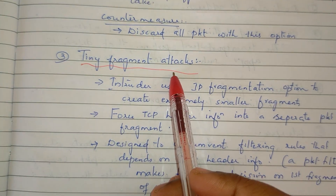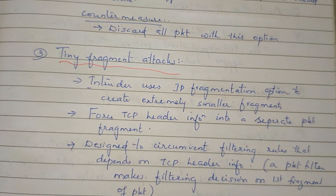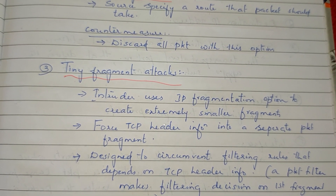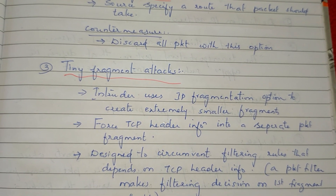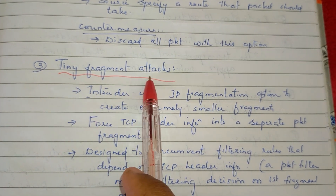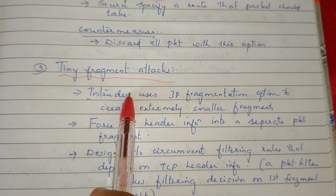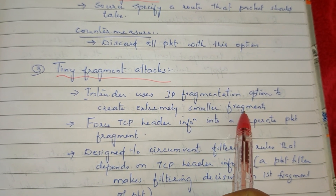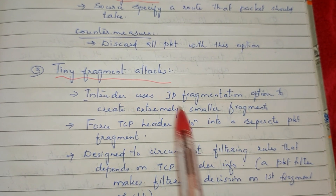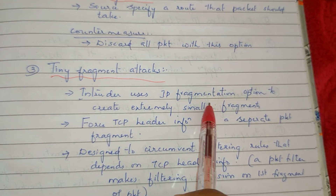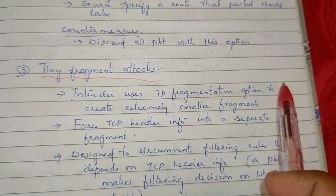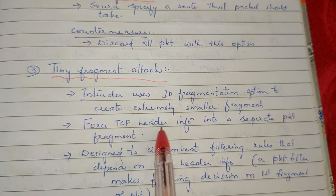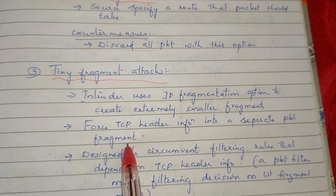Next is the Tiny Fragment Attack. If you are using IP fragmentation, you can divide packets into fragments. In this attack, the attacker uses IP fragmentation to create very small fragments, pushing the false TCP header information into a separate packet fragment.